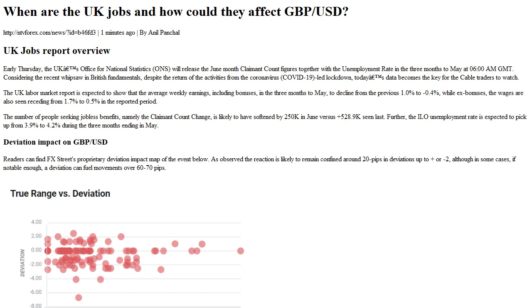As observed, the reaction is likely to remain confined around 20 pips in deviations up to plus or minus two, although in some cases, if notable enough, a deviation can fuel movements over 60–70 pips.